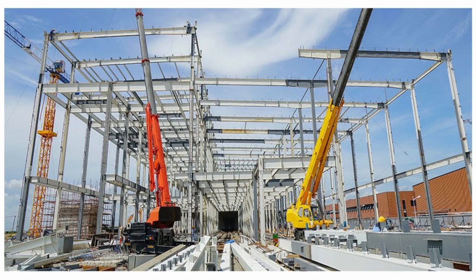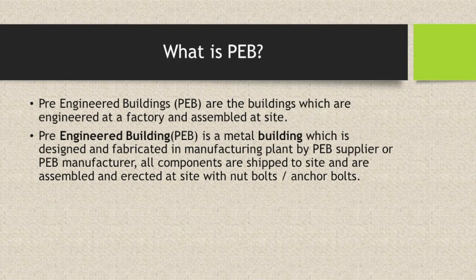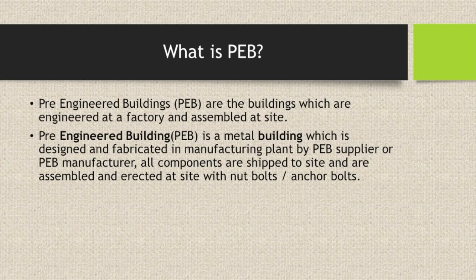So that is the actual definition. Pre-Engineered Buildings are buildings which are engineered at a factory and assembled at site. In an industry, you can design the buildings based on wind loads or the purpose you intend to use them for. The building is designed and fabricated in a fabrication shop where columns are cut and sections are rolled.